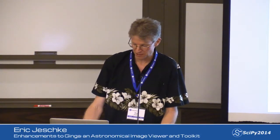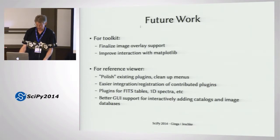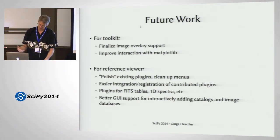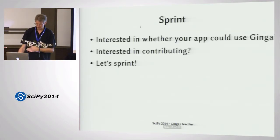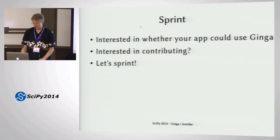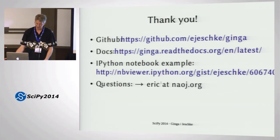For future work, the toolkit is pretty stable at this point. I want to finalize some things with the image overlay support and maybe improve the Matplotlib performance a little bit, though Matplotlib is inherently a little bit slow. For the reference viewer, a lot of the plugins are still proof of concept — some are pretty advanced, the ones we use at Subaru, while others need polishing. I'd also like to make it easier for people to contribute and register plugins. If you're interested in whether your app could use Ginga or in contributing to the project, I'm going to be around for the sprint days — I'd love to talk to you. Let's sprint or let's chat. Thank you very much.